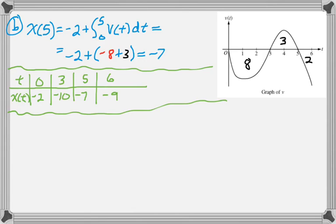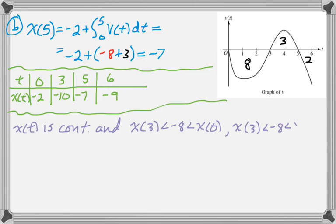This is an intermediate value theorem question. The function is continuous, which it is. At t = 3, it's less than -8, and at t = 0, it's greater than -8. At t = 3, it's less than -8, and at t = 5, it's greater. A third time, at t = 6, it's less, and at t = 5, it's greater. So the intermediate value theorem applies on each of those intervals.